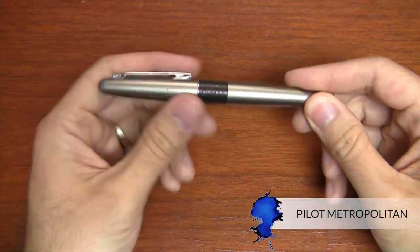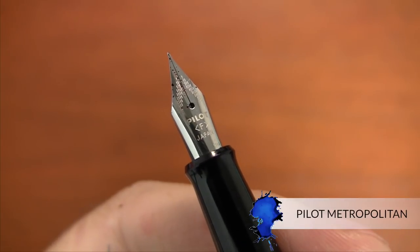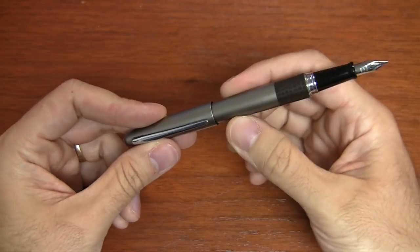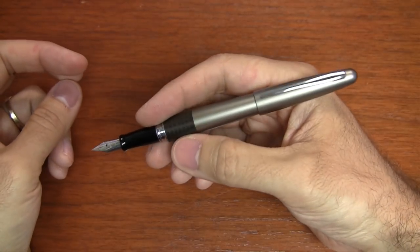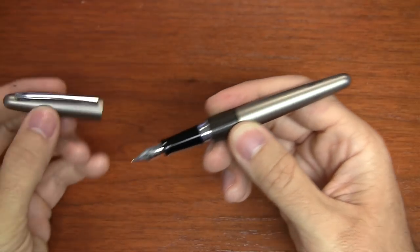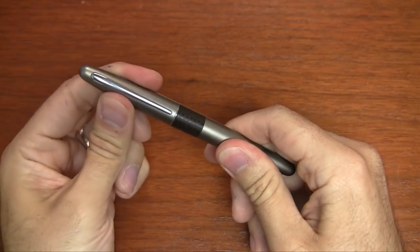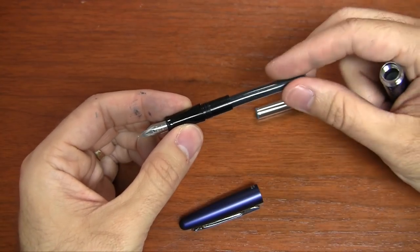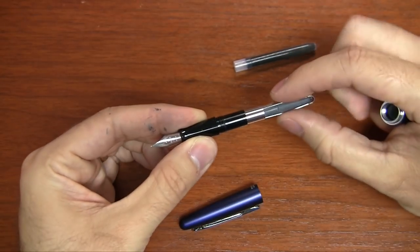One of the first pens I always consider carrying is the Pilot Metropolitan, especially in a fine nib. Only $15, very inexpensive, so you don't have to worry about losing it or dropping it. It's a reliable writer and it's a fine nib, so when you're getting handouts and things like that with other people's paper and you don't know the paper quality, having a finer nib is always a safe bet. The snap cap is really convenient for capping and uncapping the pen when you're taking quick little notes throughout the day, and it takes a cartridge or a converter. Either way, you can bring your own bottled ink or you can just carry cartridges with you and pop them in as you need them.